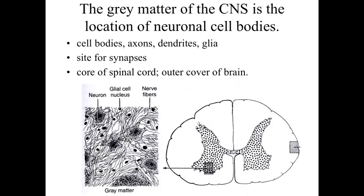If we take a look at where the gray matter is going to be located, within the spinal cord that's relatively easy — it's going to be at the core of the spinal cord. But if we take a look at the brain, it becomes a little bit more complicated. Because of the growth of the brain during development, the folds and the enlargement and twisting around, it's going to look very different. In general, it's going to form the outer cover of the brain as well as distinct regions deeper within the brain. But in all cases, it's going to be the location of the cell bodies and the location of the synapses.